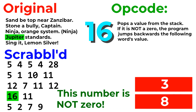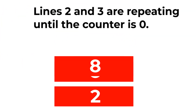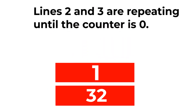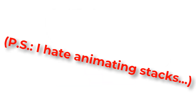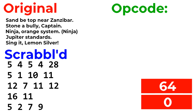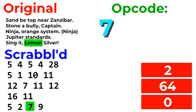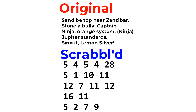Now, the program jumps backwards that many words, so it jumps back to Zanzibar. And now it keeps looping through this until the counter value reaches 0. So now we're at the finalizing stages of this program. The program adds 2 to the top value on the stack. The next opcode pops the top value on the stack and prints it to the screen. And that is this five-line Beatnik program.